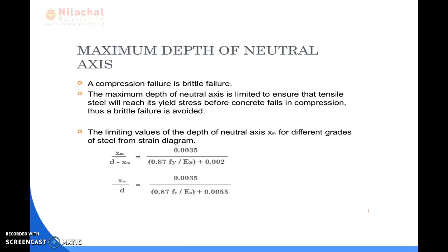The maximum depth of neutral axis is discussed next. Compression failure is brittle failure, so the maximum depth of neutral axis is limited to ensure that tensile steel reaches its limiting stress before concrete fails in compression, thus avoiding sudden failure. The limiting value of the neutral axis depth, XM, is derived from the strain diagram: (d − XM)/XM = 0.0035 / (0.87Fy/Es + 0.002), which gives XM/d = 0.0035 / (0.87Fy/Es + 0.0055).